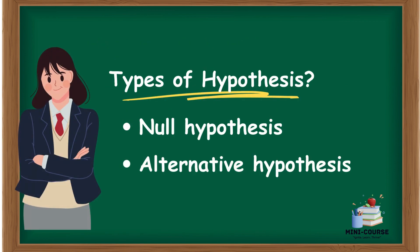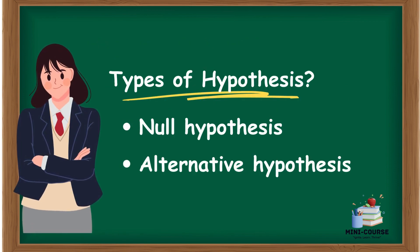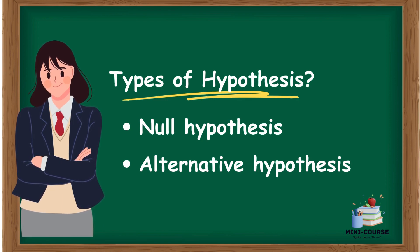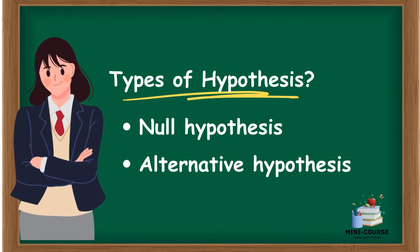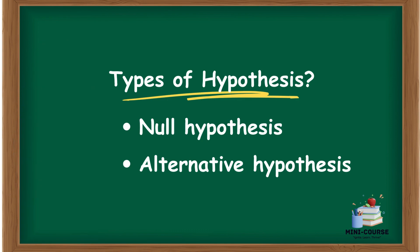There are two types or forms of hypothesis. One is the null hypothesis, and two is the alternative hypothesis.